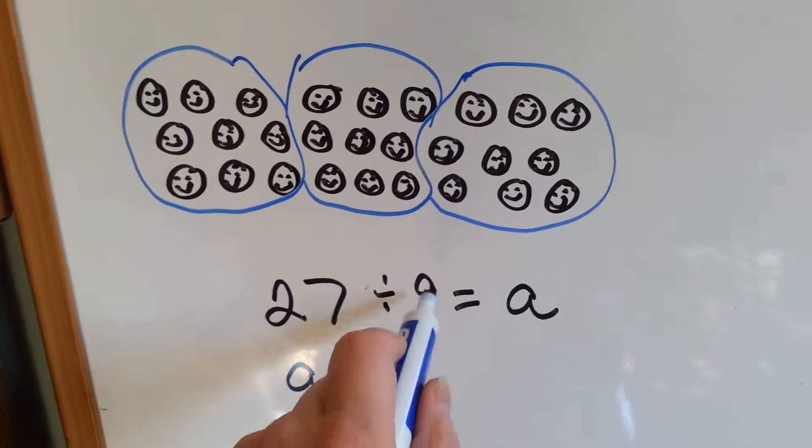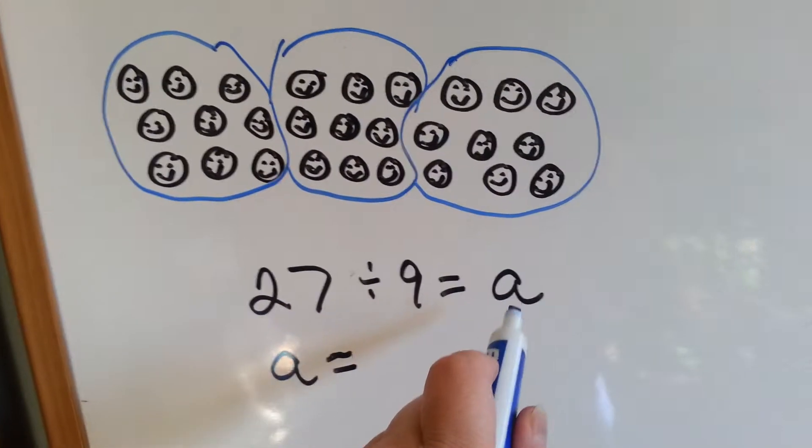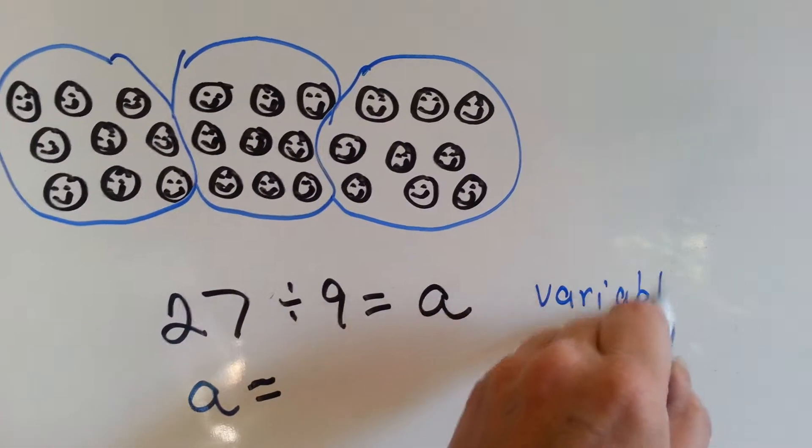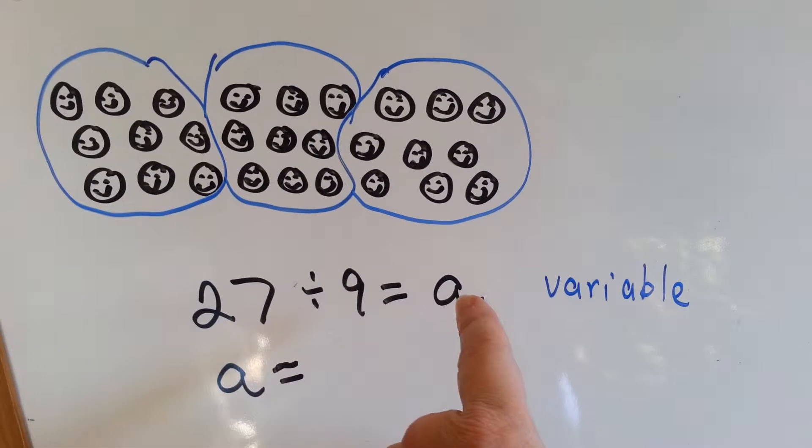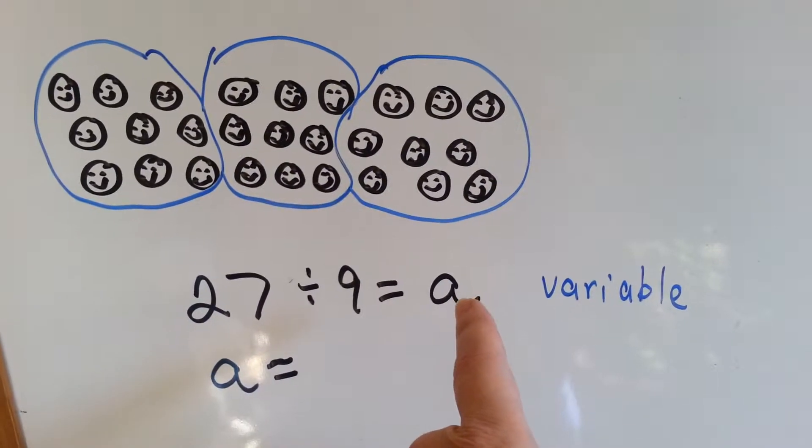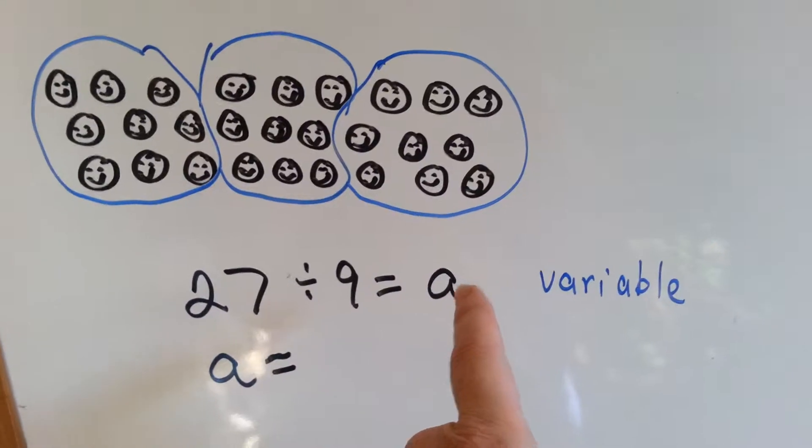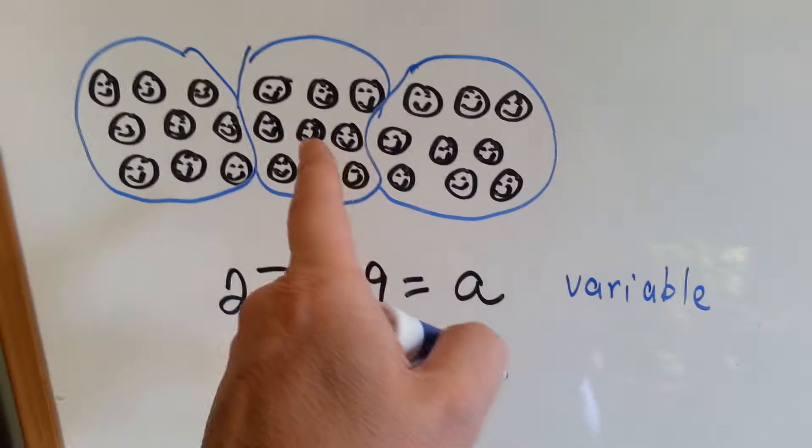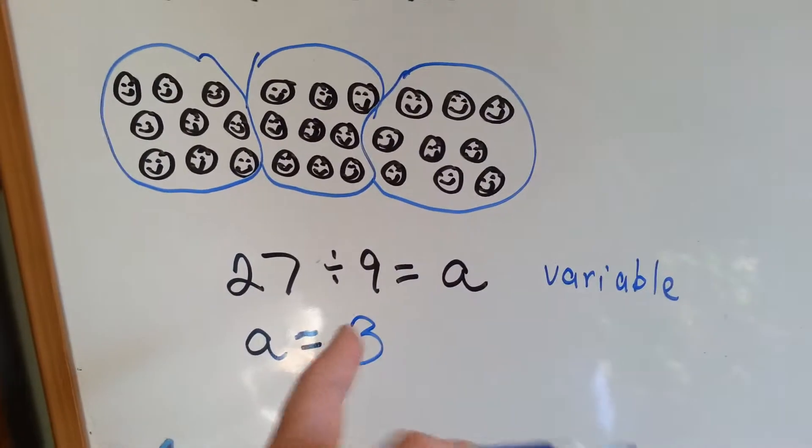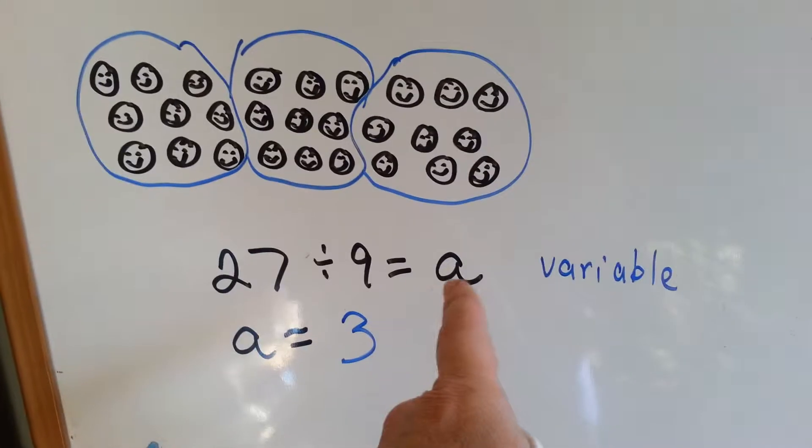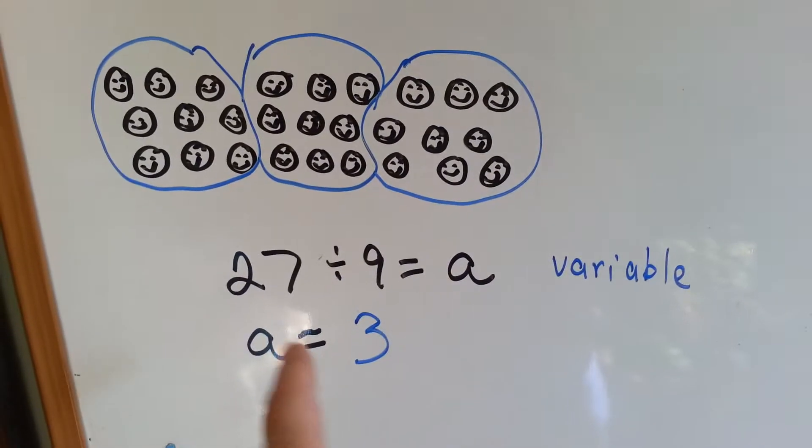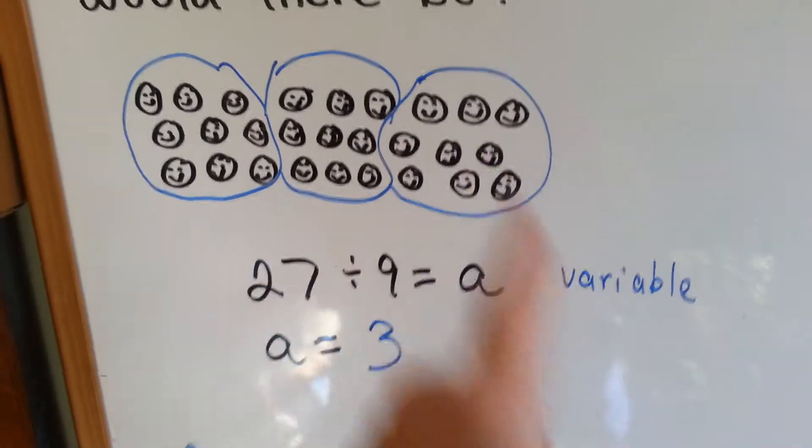27 divided by 9 equals A. Remember, A is what's called a variable. A variable is an alphabet letter that takes the place of a number and it can vary what it means. In this problem, A could mean 3. In the next problem, A might mean 5 or it might mean 249. We don't know. It varies for each problem. So A is the variable. A equals 3 because we have three groups.